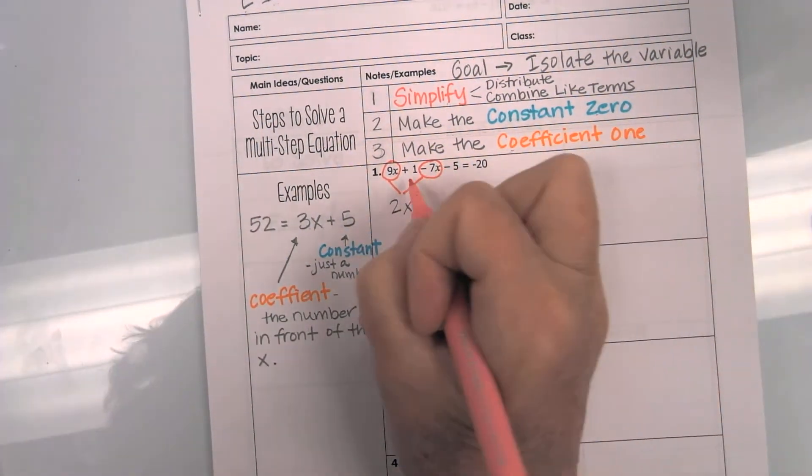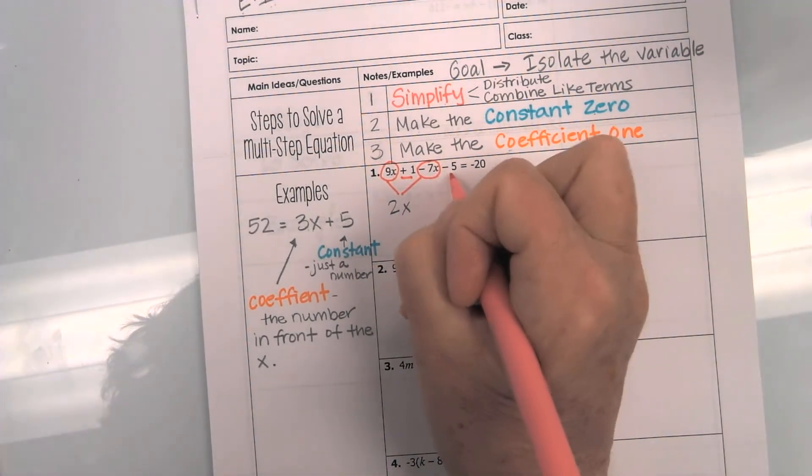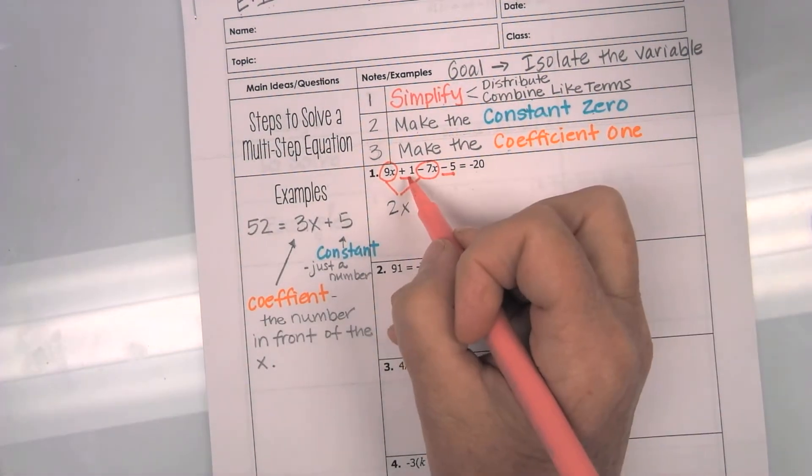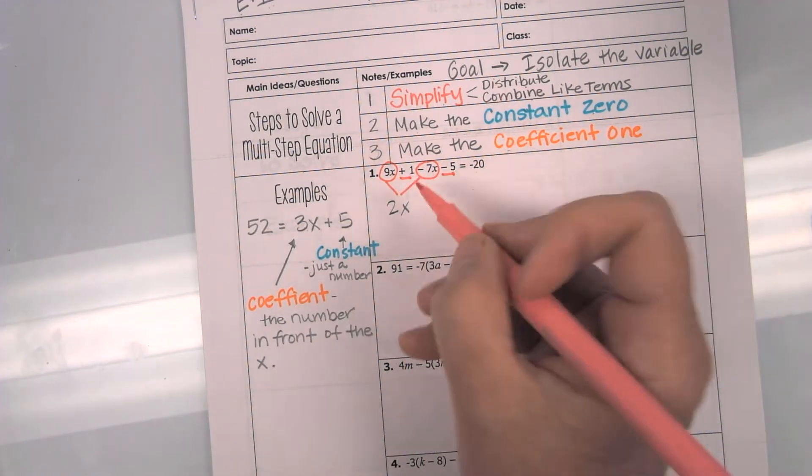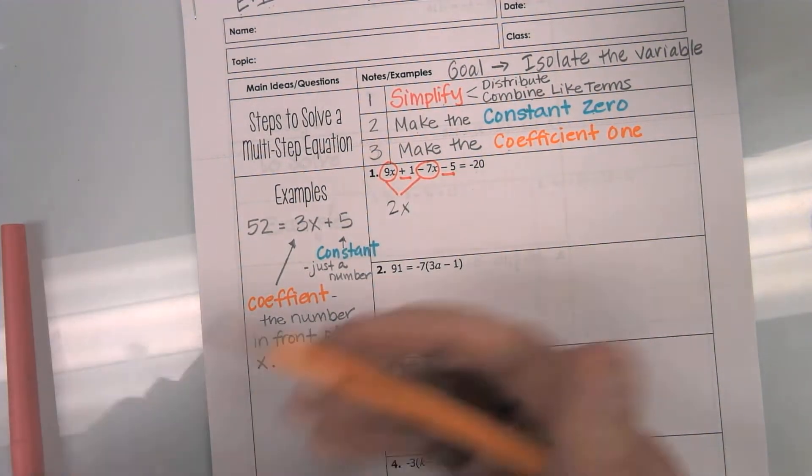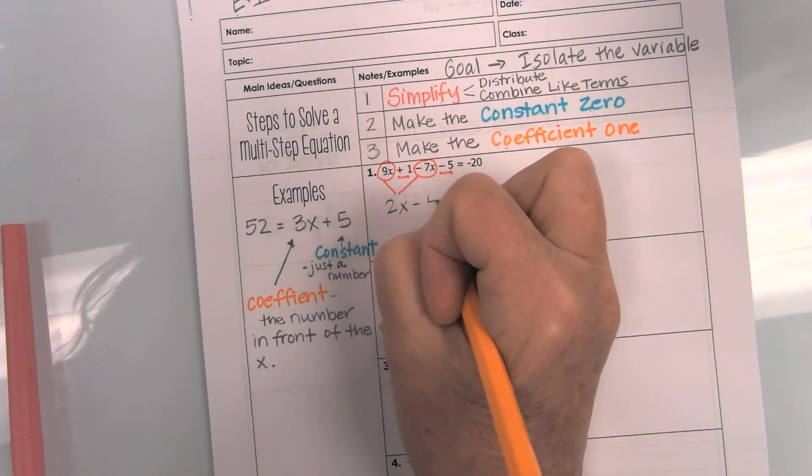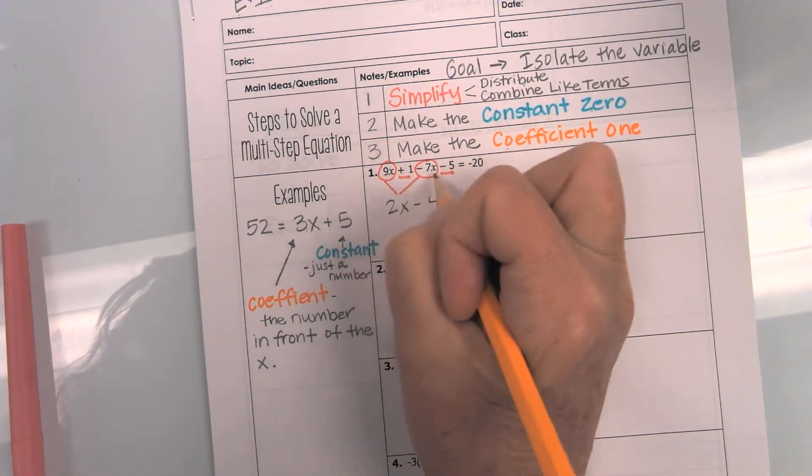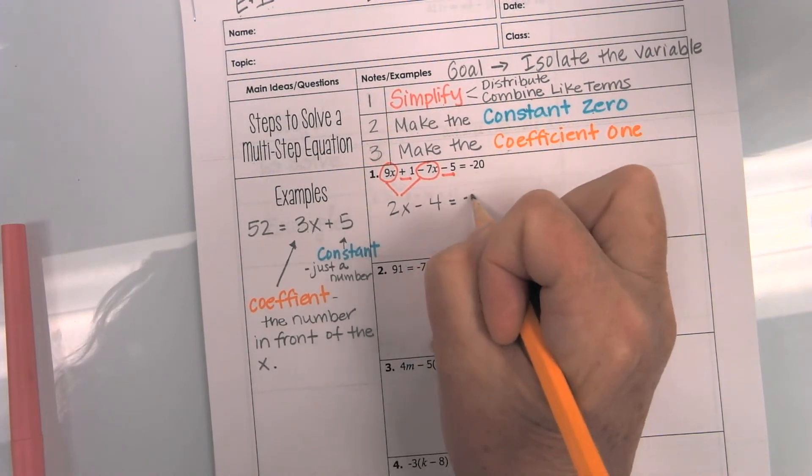Then I notice that I also have a positive 1 and a negative 5. Now, those are the same because they have no variable. So, a positive 1 and a negative 5 gives us negative 4. So, now that I've combined my like terms on this left side, I can go ahead and start to solve.